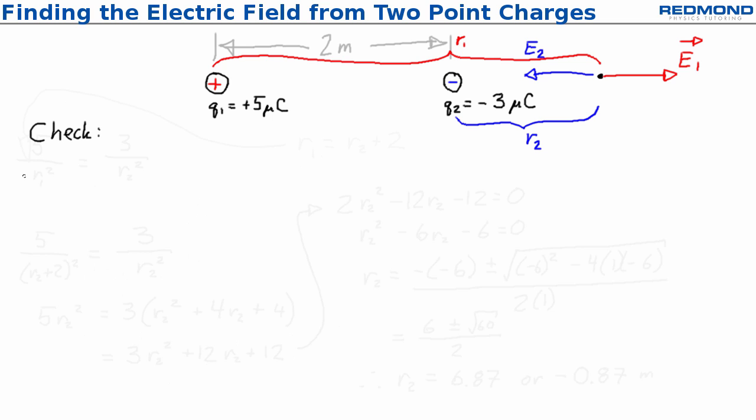Since R1 is equal to R2 plus 2, when R2 is equal to negative 0.87, I find that R1 is 1.13, so this actually gives me a position between Q1 and Q2.